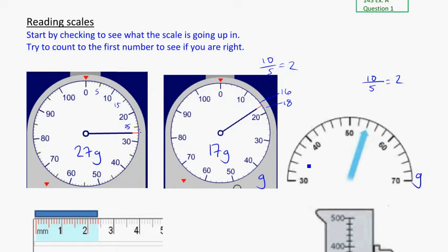On this scale, again, we kind of already looked at it, that it goes up in twos. So just to check it, thirty, two, four, six, eight, forty. So this one is going to read as fifty, two, four. So this here would be fifty-four grams.